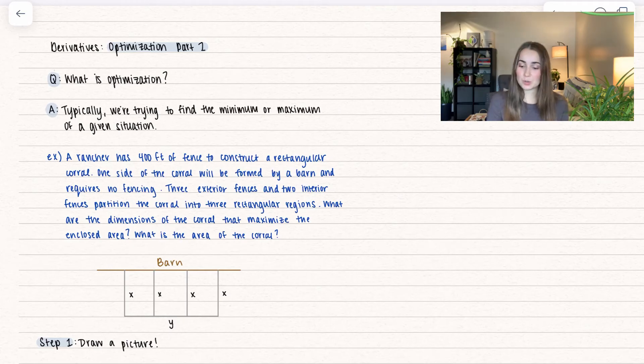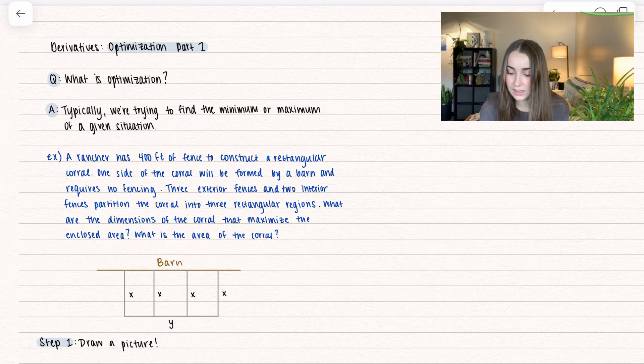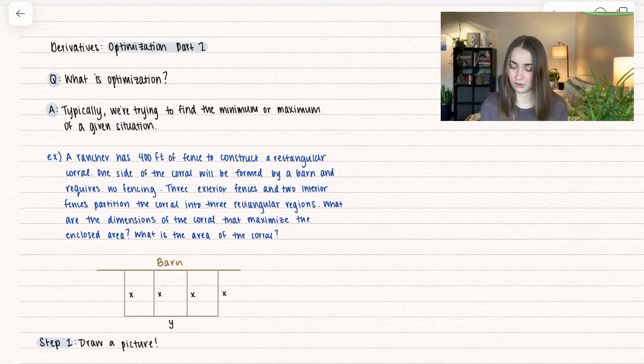Typically we're trying to find the minimum or maximum of a given situation - optimize space, volume, or price. Let's dive into an example. A rancher has 400 feet of fence to construct a rectangular corral. One side is formed by a barn requiring no fencing. Three exterior fences and two interior fences partition the corral into three rectangular regions. What dimensions maximize the enclosed area, and what is the area of this corral?